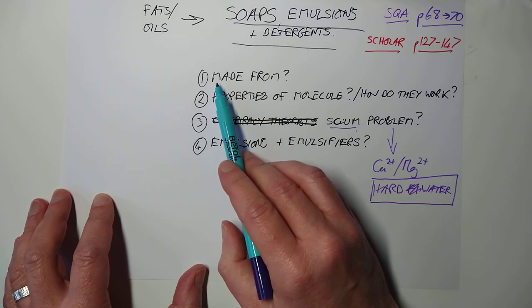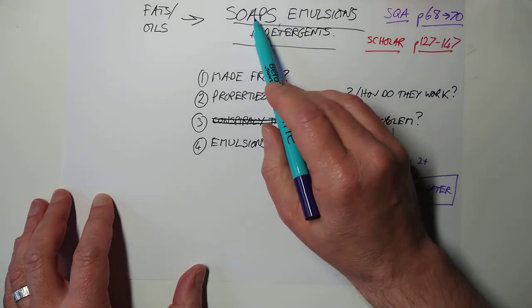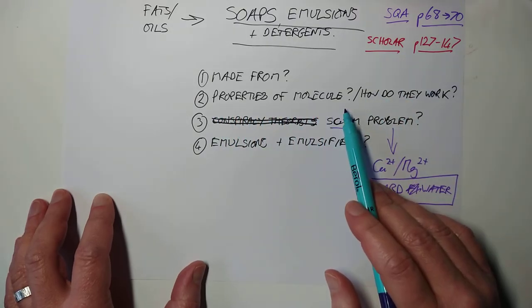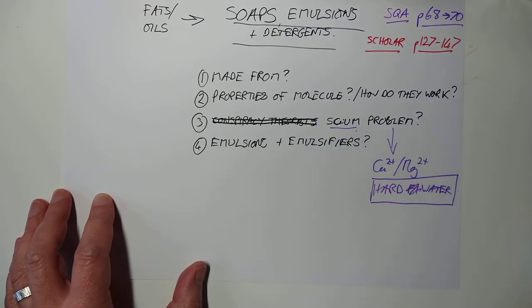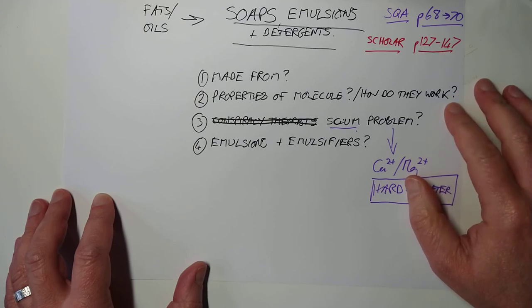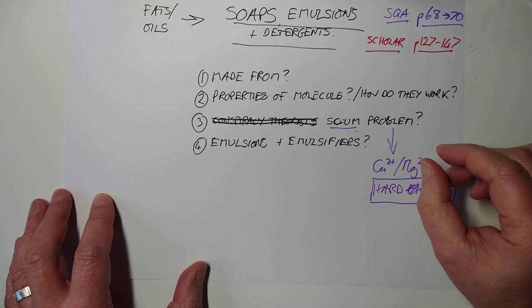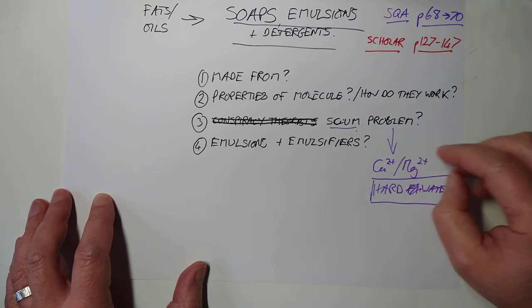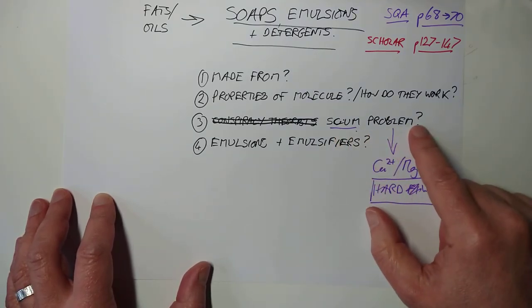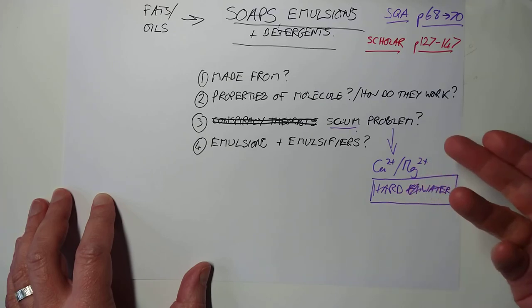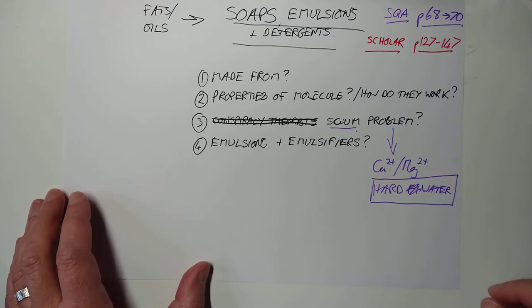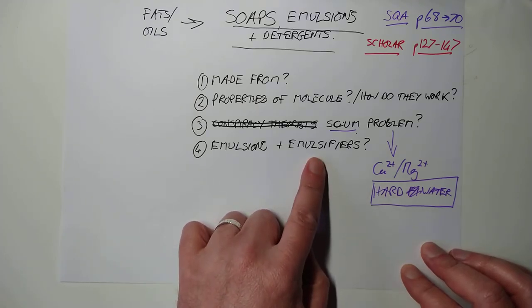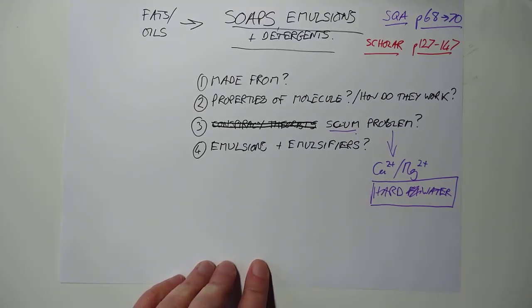So, quick recap. Soaps are made from, ironically, fats or oils with alkaline hydrolysis. And a soap is basically a salt of the fatty acid from the fat. They have got a dual property nature to them. They have a large non-polar section and a tiny polar bit at the end. They enable you to form an emulsion of oils with water, which is tiny droplets of the non-polar oil dispersed in the water. What's the problem with scum in some areas of the country? It's basically an insoluble version of the soap molecule. How do we get around that problem? We use what are called soapless detergents. Thanks for listening, folks. Bye-bye.